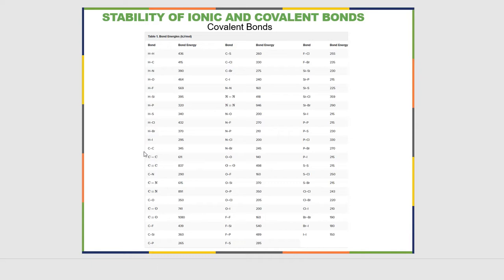I want to look at the carbon-carbon single bond, the carbon-carbon double bond, and the carbon-carbon triple bond. A single bond has a lower bond energy than a double bond, which has a lower bond energy than a triple bond. Said another way, a carbon-carbon triple bond is more stable than a double bond or a single bond, because it takes more energy to break this bond.